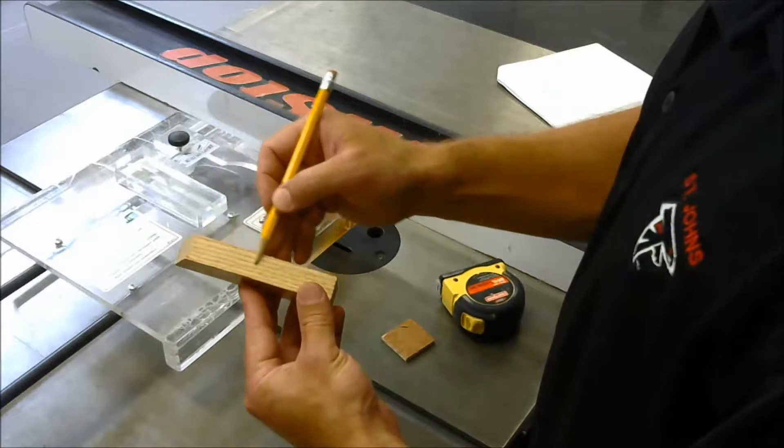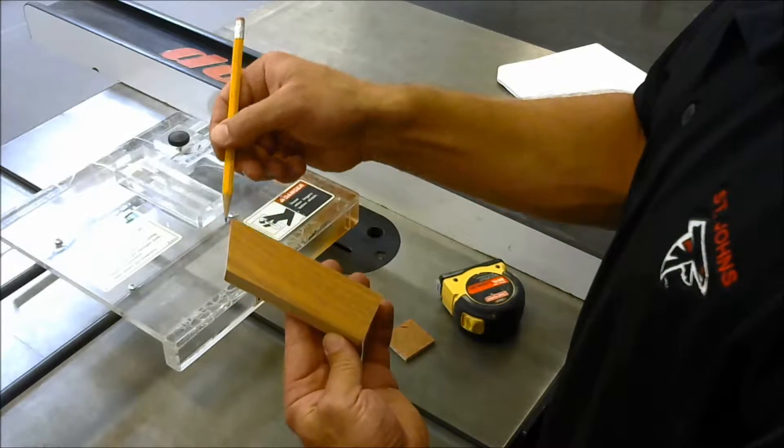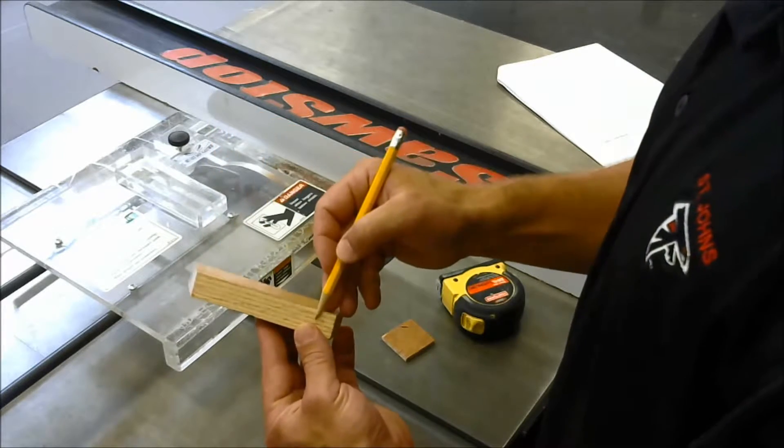First we're going to be making the cut on the short edge, not the long edge but the short edge. The angle angles down this way, so we're making the cut on the short edge.